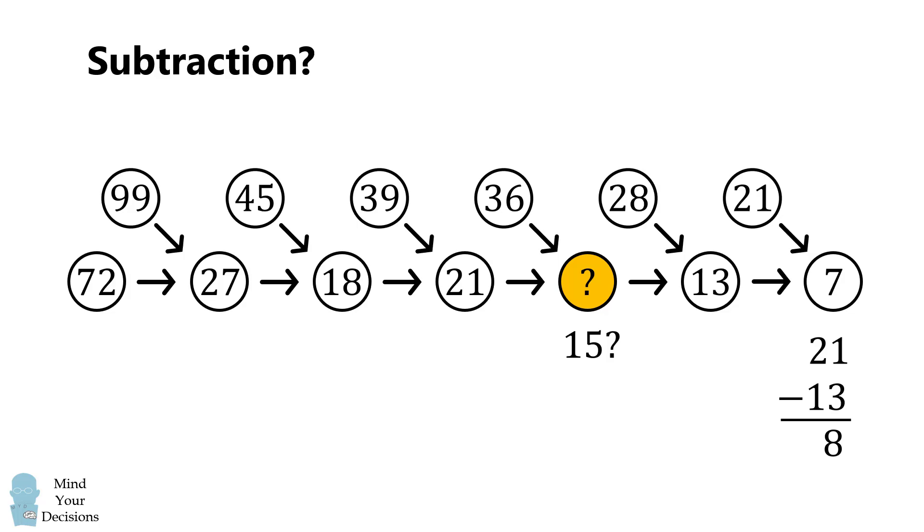But the very last number is equal to 7, and this is not a typo. Therefore, this cannot be the rule.